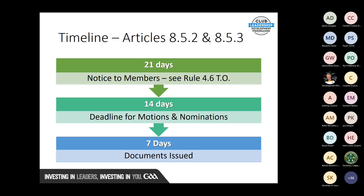In previous times, everything was done by post — now a lot is done by email. Methods of notifying members are set out in Rule 4.6 of the official guide. One thing to say to secretaries in particular: when sending out notification by group emails, please ensure you use the BCC option so other members don't see other members' email addresses, as they may not wish that and you could be in breach of GDPR.